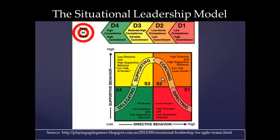The situational leadership model is a simple four-quadrant model based on how much direction and support you give the individual you're leading. Level one requires high direction and low emotional support — you simply tell them what to do: A, then B, then C. This resonates with SAMR's substitution level and also with Bloom's Taxonomy at the remember and rote learning level. There is definitely a place for this when a student has low task proficiency and you don't yet have a strong relationship.